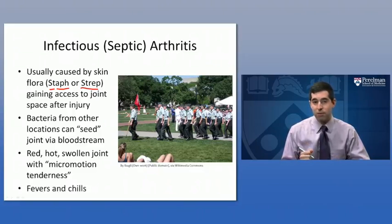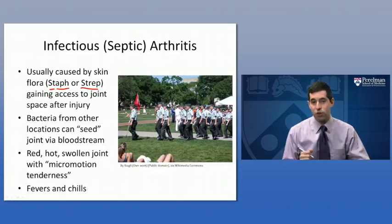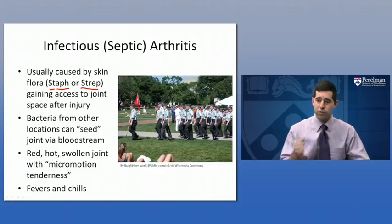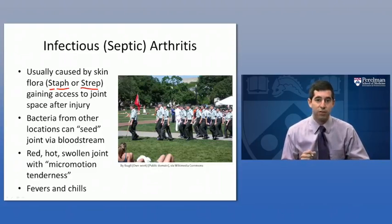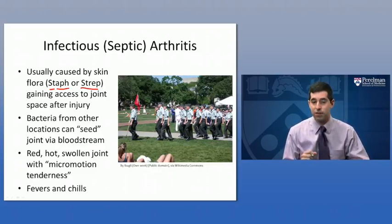Some of the other findings you may see in infectious arthritis include fevers and chills. Any infection can cause a fever, but often the chills here are described as rigors — very intense, whole body shaking — mainly because there's a lot of inflammation and chemicals being released by the inflammatory cells and the bacteria, all contributing to often very high fevers and these very significant chills.